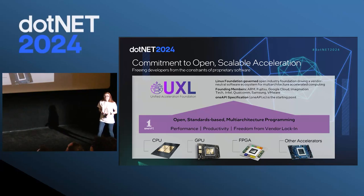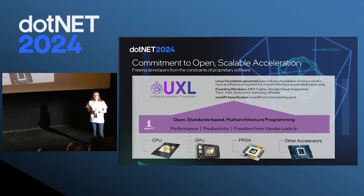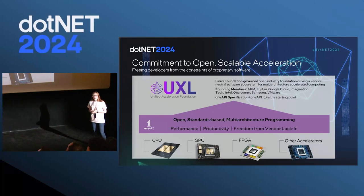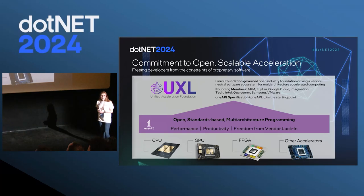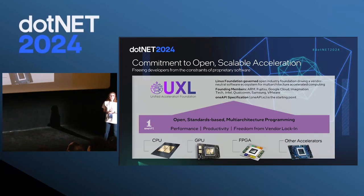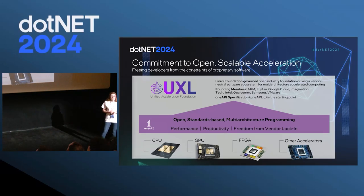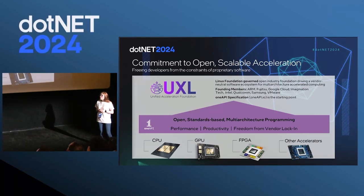What is the UXL Foundation? It's the evolution of OneAPI. For it to be useful for the industry, it needs to be developed broadly. As part of the UXL Foundation, there are many other companies such as ARM, Fujitsu, and Qualcomm contributing to it. From OneAPI, libraries such as OneDNN have been donated to the UXL Foundation, which is under the Linux Foundation, building software that is vendor-neutral.